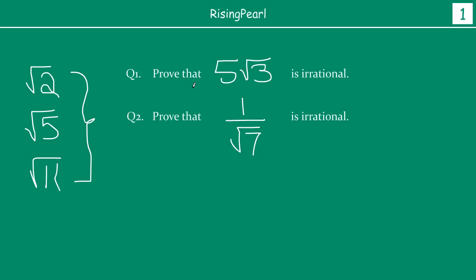In today's presentation, we are going to multiply a rational number times an irrational number. We have square root 2 multiplied by 5, and here we have 1 divided by square root 7. We are going to find out how we can prove these types of numbers are irrational. It's important to recall that from the last class we discussed at length about rational and irrational numbers, and we are going to prove these using a different technique.